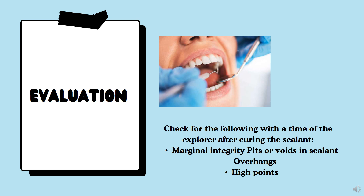After placing the pit and fissure sealant, evaluate for high points and overhangs. Ask the patient to bite and check for high points — if present, reduce them. Make sure there are no overhangs, as overhangs can cause more caries and put the patient at higher risk. If overhangs and high points are present, you are inducing more caries in the patient.